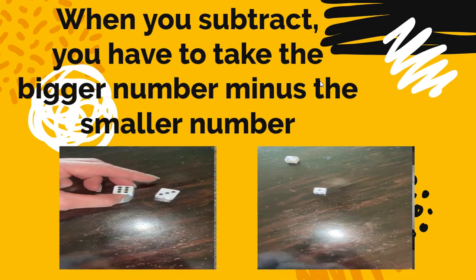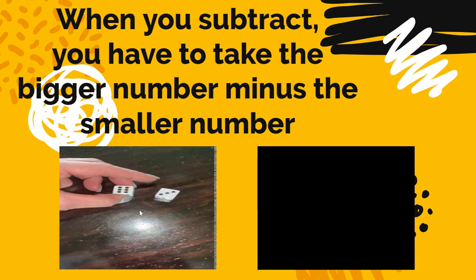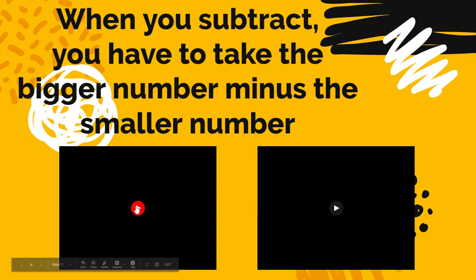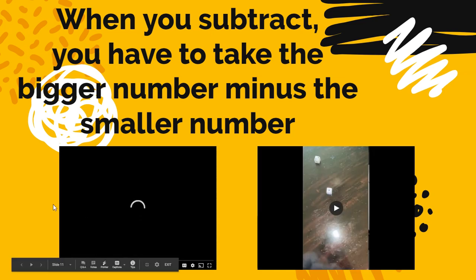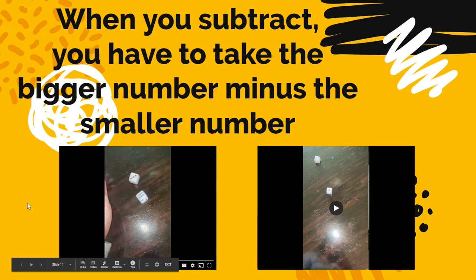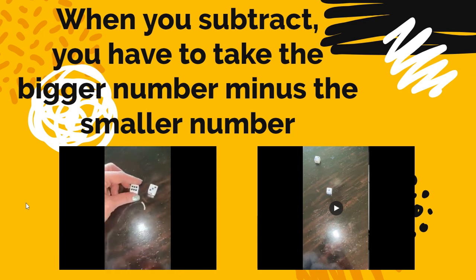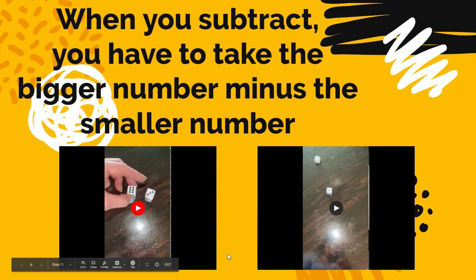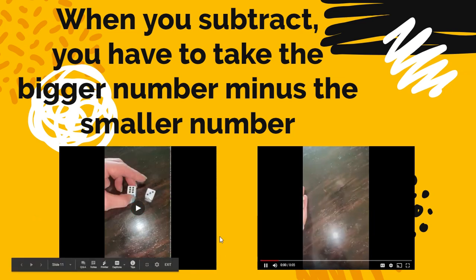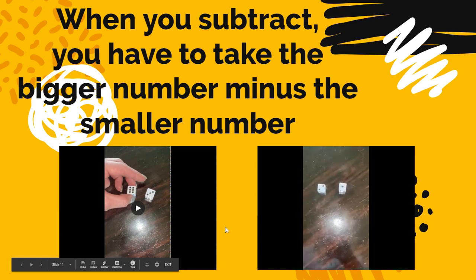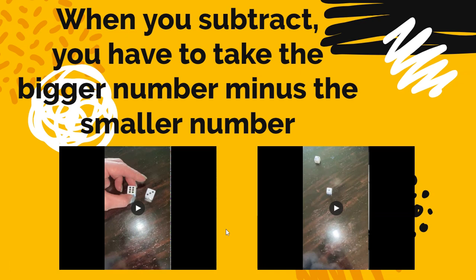Another thing you have to know is when you subtract, you have to take the bigger number minus the smaller number. So when we roll dice, let's look here at me rolling some dice. I get a 6 and a 3, so I would have to do 6 minus 3 because 6 is bigger than 3. Let's look at this one. I rolled a 2 and a 1, so I would have to do 2 minus 1 because you have to take the bigger number minus the smaller number.